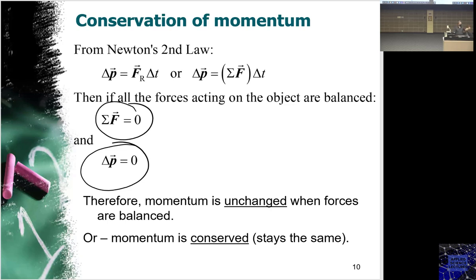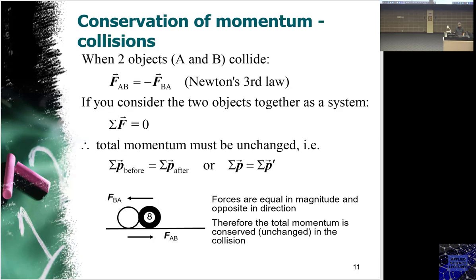We write conservation of momentum as: sigma p before equals sigma p after, or using vector notation, sigma p = sigma p'. The first represents momentum before the collision and the second after. So the momentum before the collision equals the momentum after the collision — this is conservation of momentum.